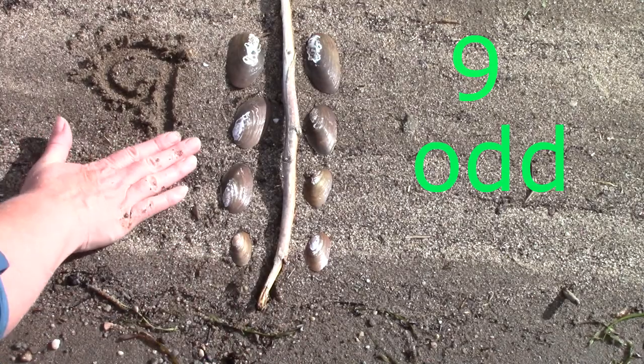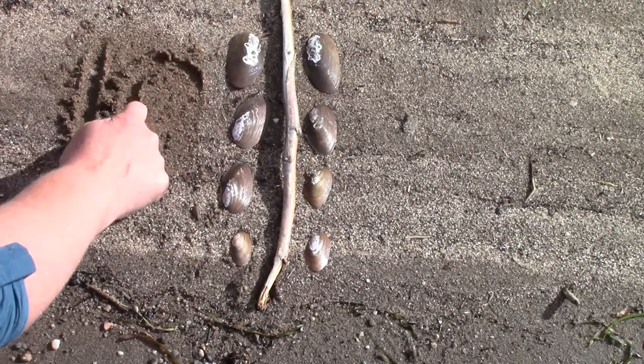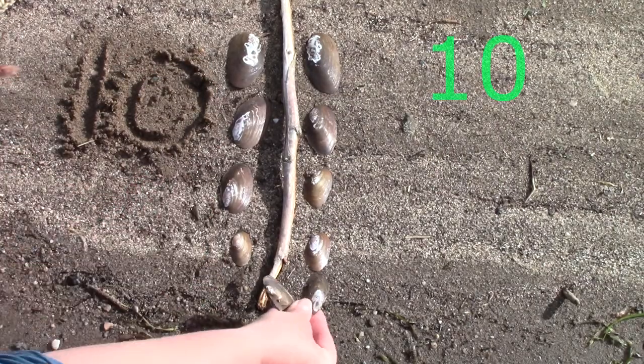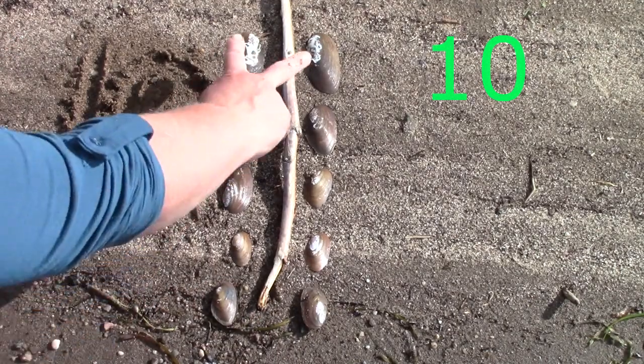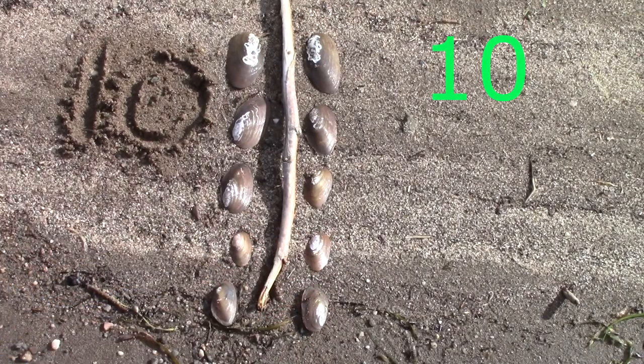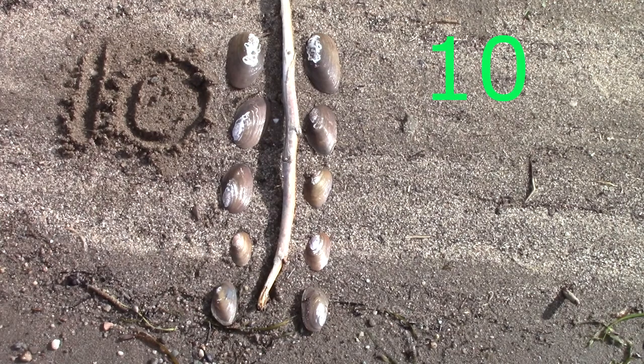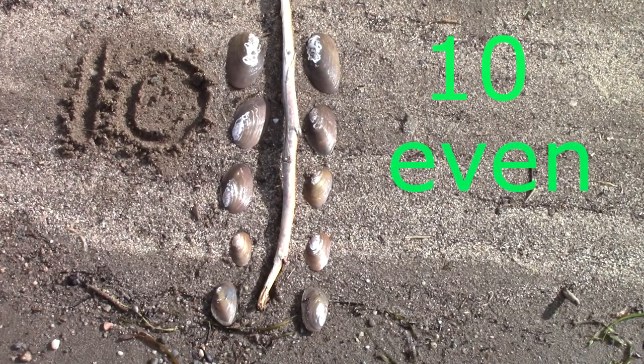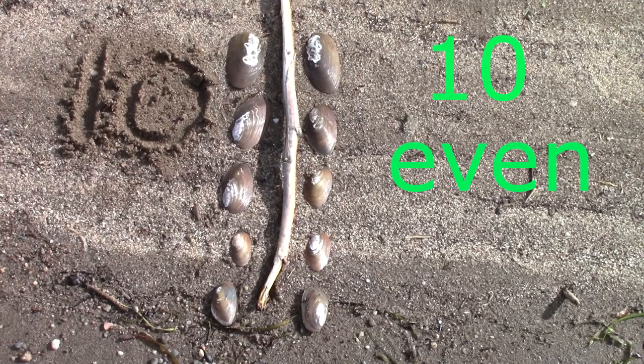What if instead of nine I have ten? Ten. Is ten an even number or an odd number? Two, four, six, eight, ten. Ten is an even number because each side has the same number. There's five on each side.